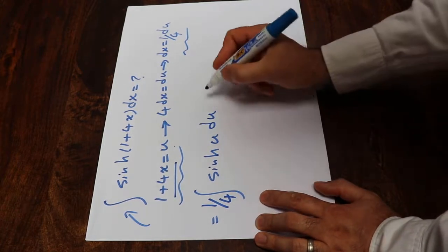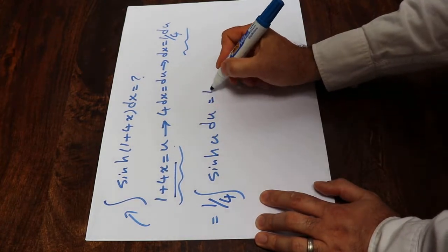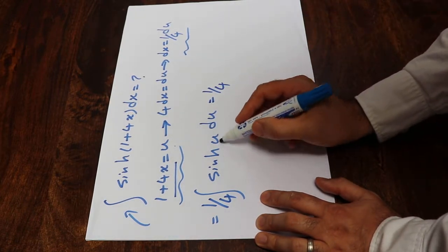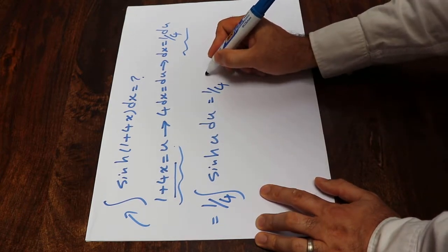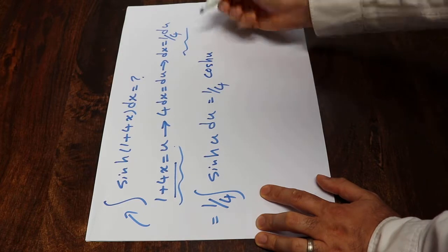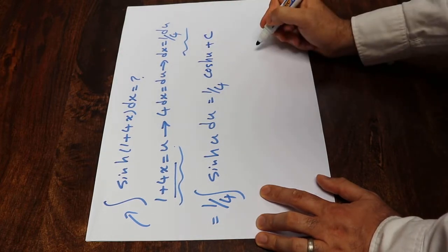From the table of integrals, that will be equal to 1 divided by 4. We know that the integral of hyperbolic sine u du equals hyperbolic cosine u plus c, which is the constant of integration.